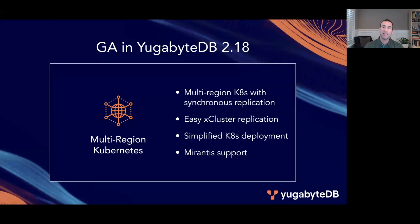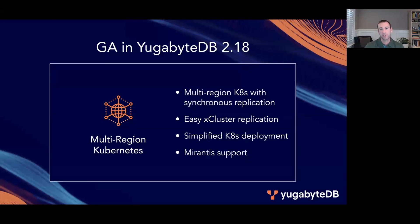Enhancements in YugabyteDB Anywhere eliminate many of the common points of friction when deploying Kubernetes. Multi-region, multi-cluster Kubernetes deployments are now much easier thanks to the ability to combine YugabyteDB's native synchronous replication capabilities — i.e., stretch clusters — with Kubernetes multi-cloud cluster service, or MCS. This means you can now spread your Kubernetes cluster and database cluster across regions or even across clouds, all from a simple UI.